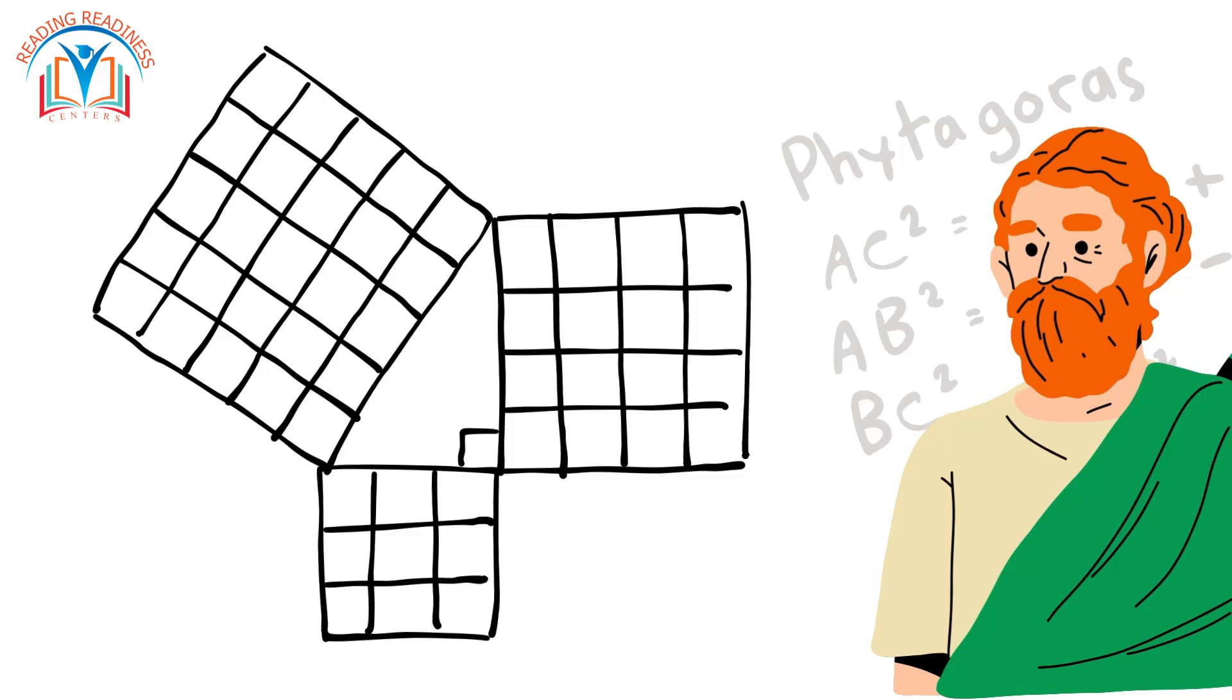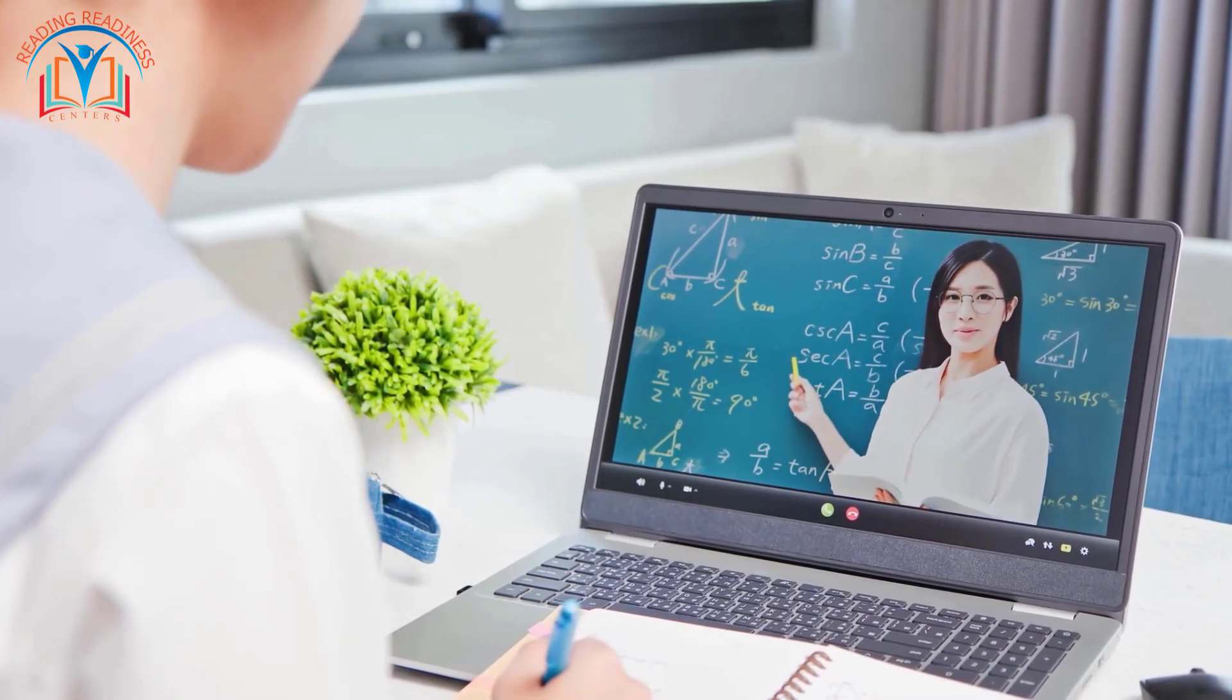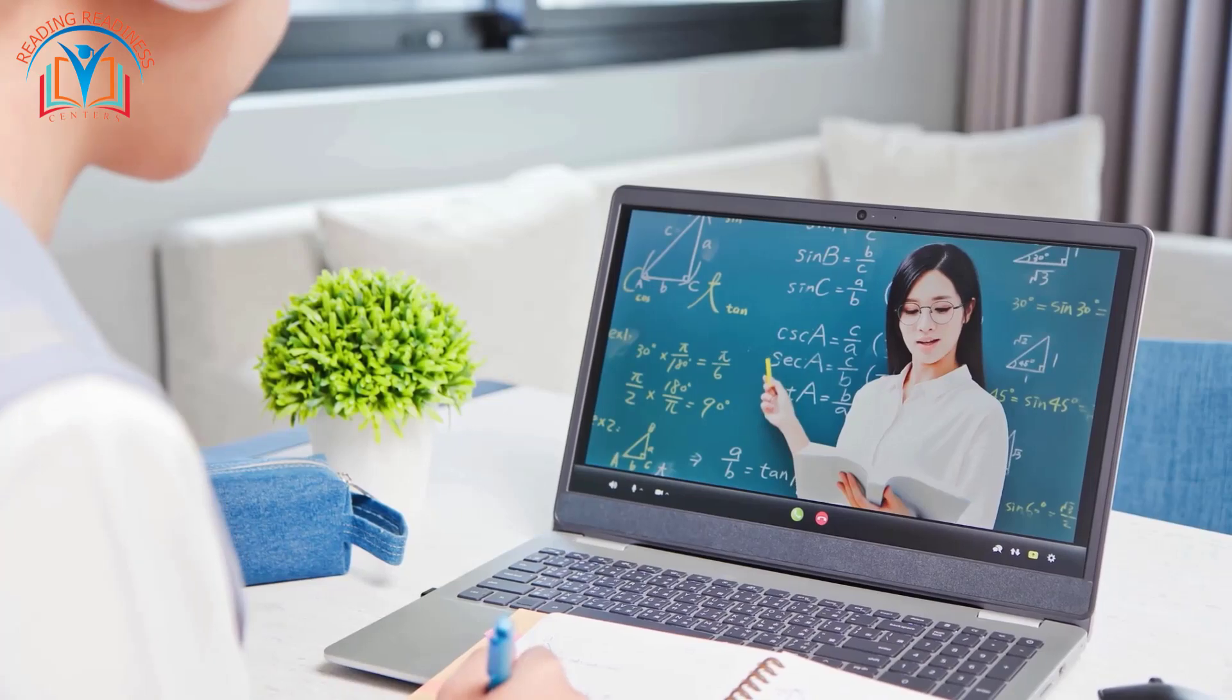Now, imagine we take the sides of our right triangle and use them to build squares. A square for the base, a square for the height, and a big square for the hypotenuse. The Pythagoras Theorem tells us something incredible, the area of the big hypotenuse square is exactly equal to the areas of the smaller base and height squares added together.